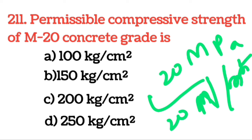या इसको आप 20 N per mm² भी बोल सकते हैं। M20 की जगह M25 होता तब 250 kg per cm², M15 होता तब 150 kg per cm², M10 होता तब 100 kg per cm²। So M20 grade of concrete permissible compressive strength: 200 kg per cm², 20 MPa, 20 Newton per mm².